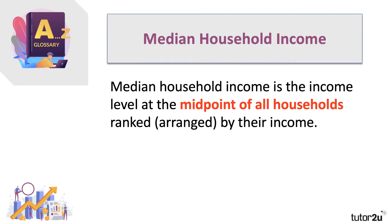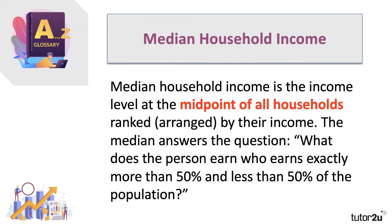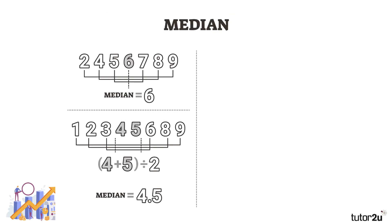The median household income is a different way of looking at things. It's the income level at the midpoint — halfway — of all households ranked by their income. It answers this question: what does the person earn who earns exactly more than 50% and less than 50% of the population? It's the midpoint value. We tend to use the median when the data is skewed and there are outliers — for example, people with super high incomes that drag up the mean and make it less useful. The median income divides the population into two equal groups: half above and half below.